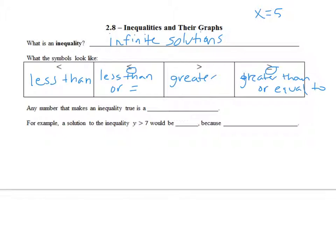Any number that makes an inequality true is a solution — that's why there's an infinite number of solutions. For example, a solution to the inequality y is greater than 7 would be 8, because 8 is greater than 7. A way to remember the greater than symbol: see how the 8 has two dots and the 7 has one — that's how we know 8 is greater than 7.